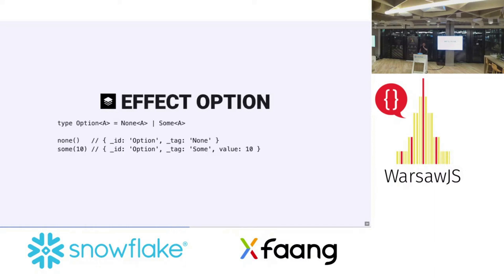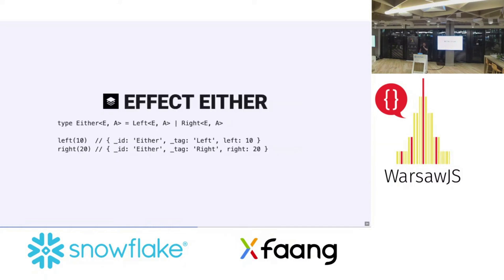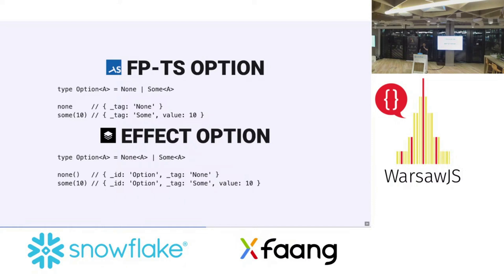At first glance Effect looks exactly the same as FP-TS — the Option type and Option object, and also the Either type and Either object appear identical. But actually there are some quite subtle differences: Effect has a little bit different types and a little bit different values for those tagged unions.